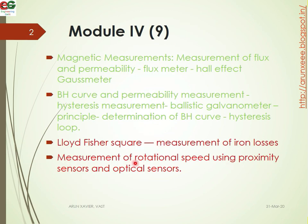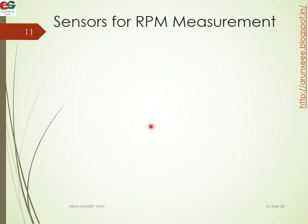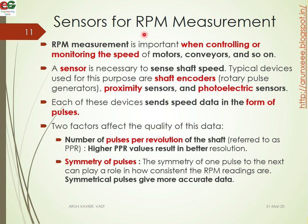The next topic is the measurement of rotation speed using proximity sensors and optical sensors. Sensors for RPM measurements — these RPM measurements are mainly related to motor speed control, conveyors and belts. The sensors can be a proximity sensor or a photovoltaic sensor.